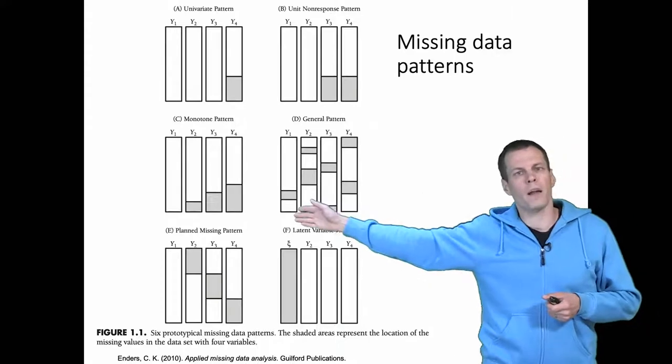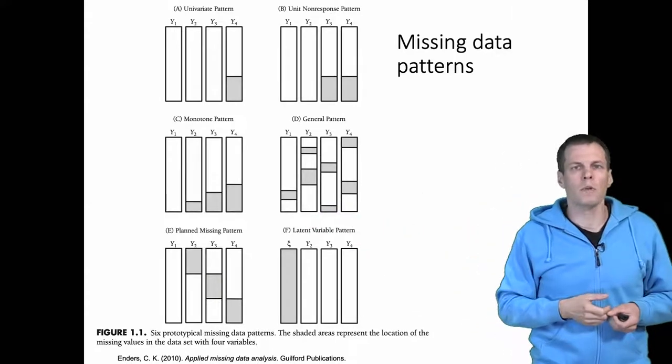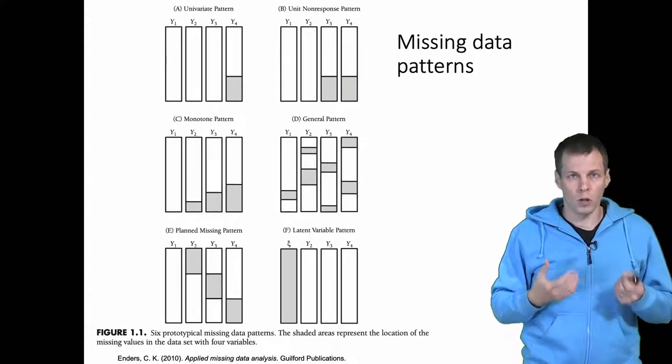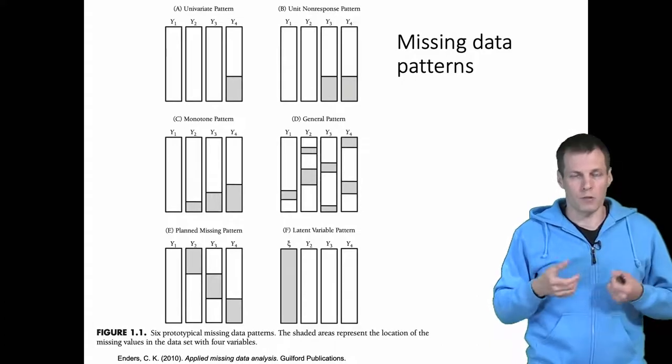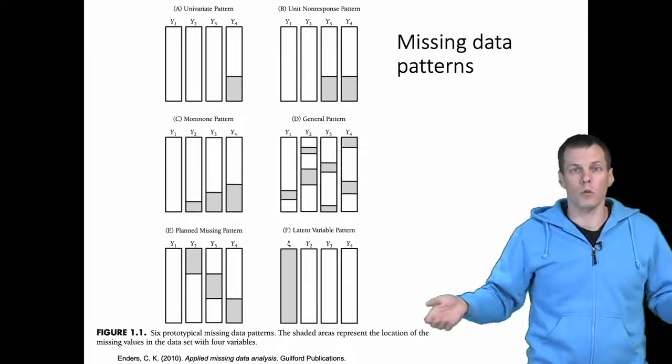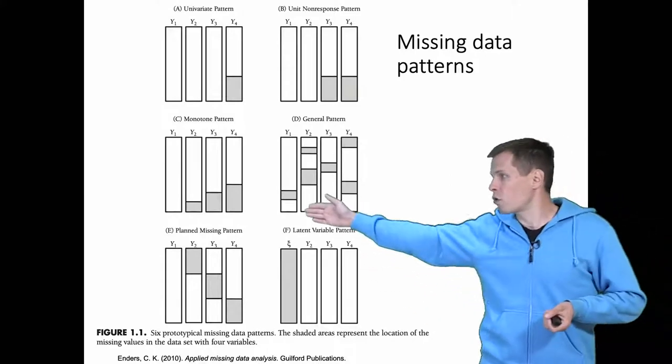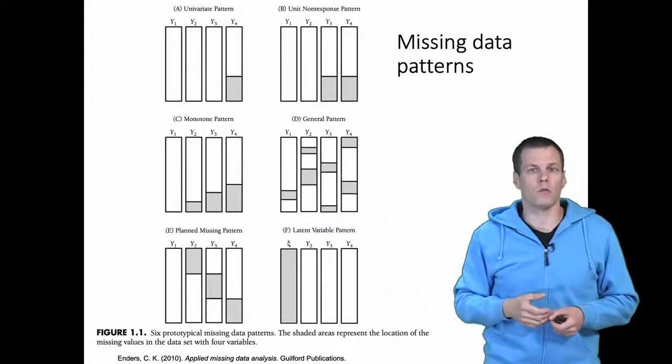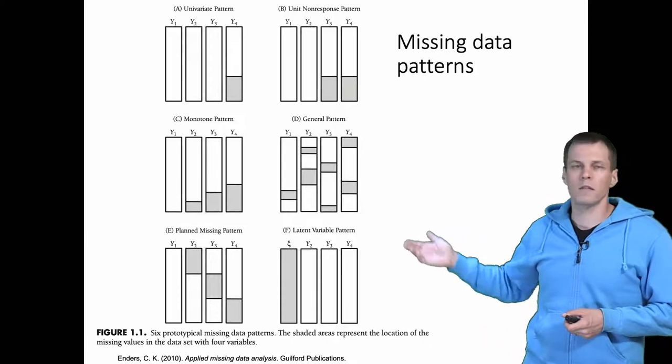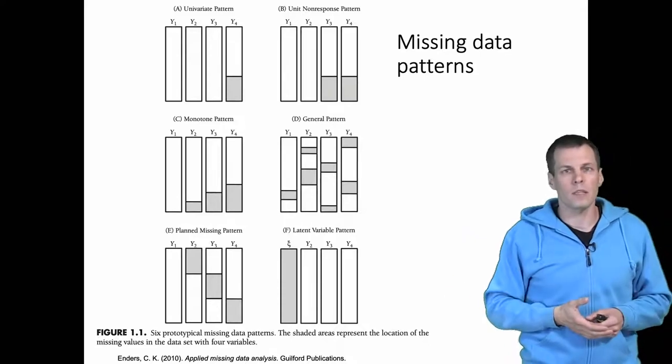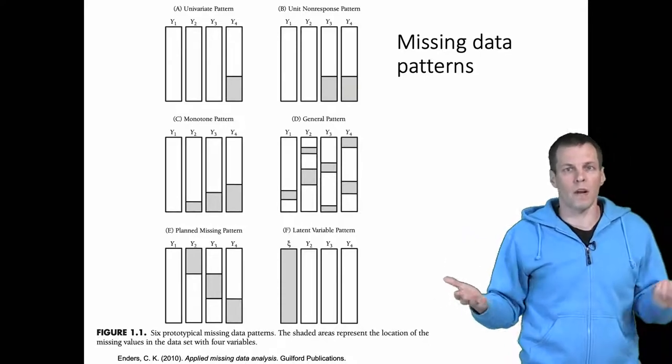Monotone pattern, where the amount of missingness increases over time, would be a problem in longitudinal studies where you have attrition, so people drop out from your study and the amount of dropouts increases as time goes on. Then there is general pattern where there's no particular pattern for missingness. Missingness is rather a random phenomenon.